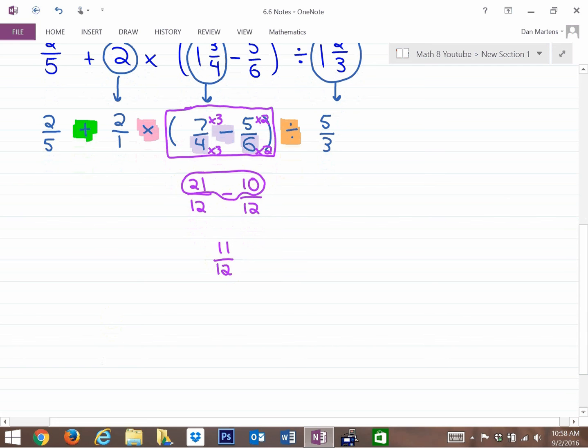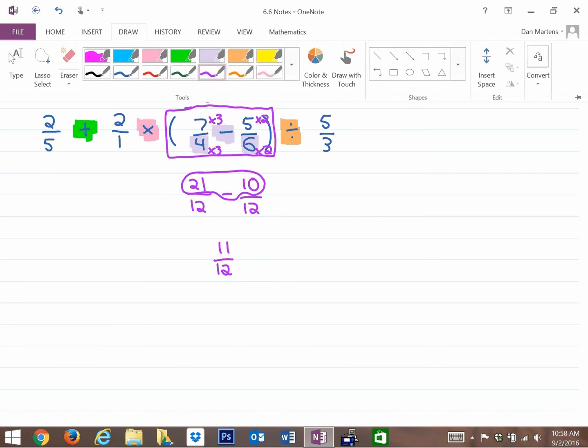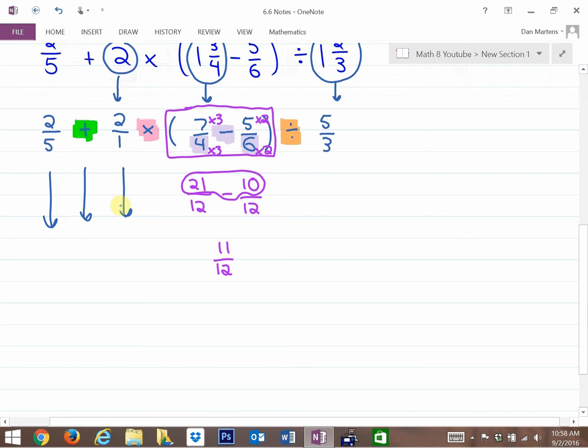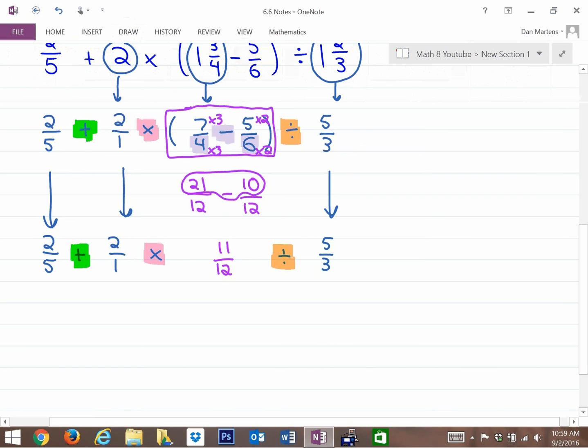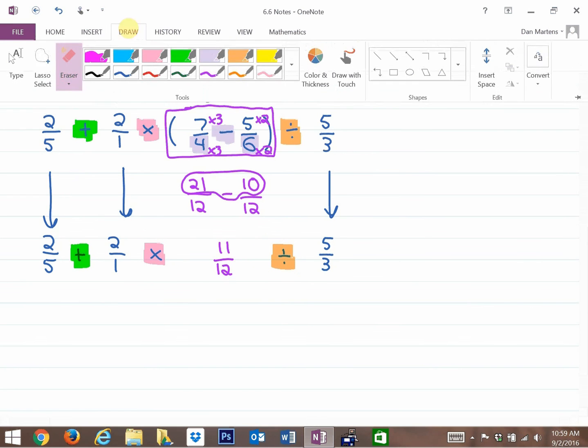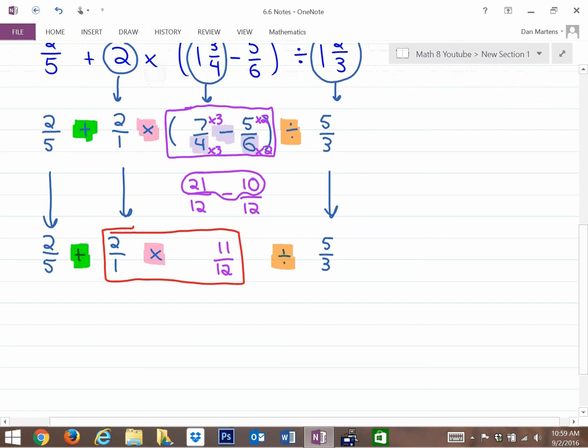We've done the subtracting part. Next, bring everything that doesn't have a box around it down to the next line to identify what to do next. These questions take a long time. We now have three operations: adding, multiplying, and dividing. With BEDMAS, dividing and multiplying go from left to right. Even though BEDMAS has the D first, because multiplying is further to the left, that's the next operation. I'm going to put a box around it.